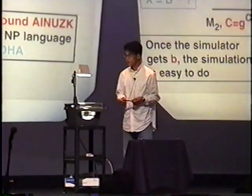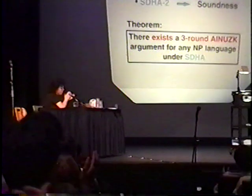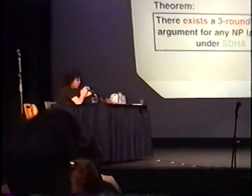Conclusion: I have proposed a three-round zero-knowledge protocol and I have shown that under SDHA, our protocol satisfies AI-NGK. I did not mention soundness, but the soundness condition is satisfied under SDHA-2, which is a similar assumption to SDHA-1. So I conclude that our result gives the first three-round zero-knowledge argument for any NP language under SDHA. Thank you.